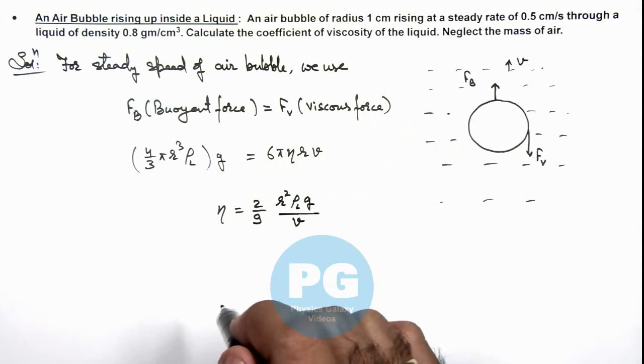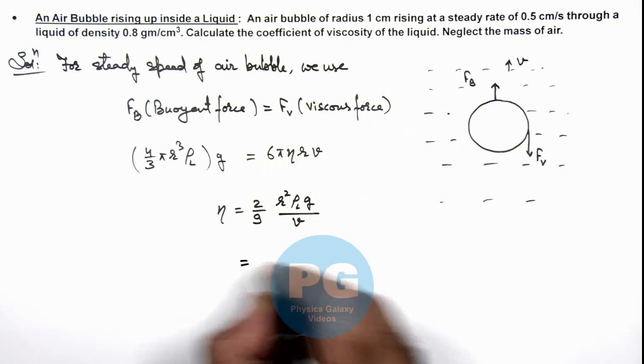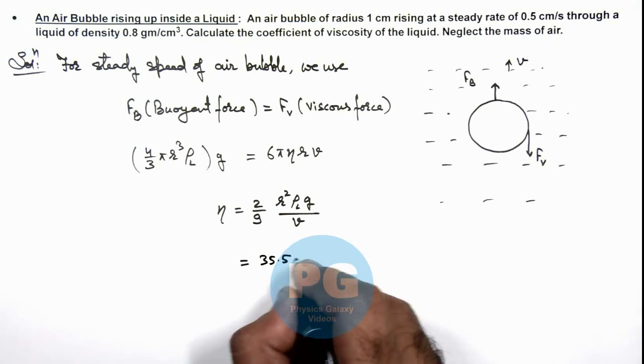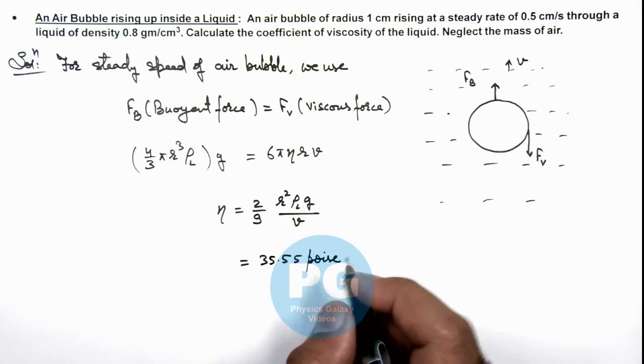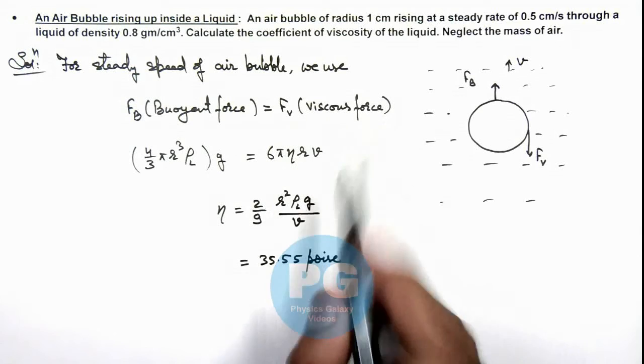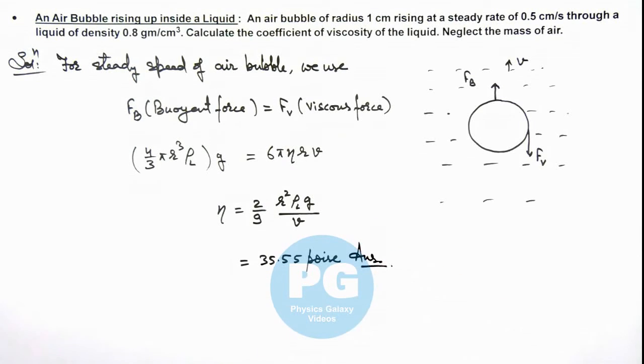Now, in this situation, if we numerically substitute all values, the final result will come out to be 35.55 poise. As all values are given in CGS units, the final result will be given by this value. That is the result of this problem.